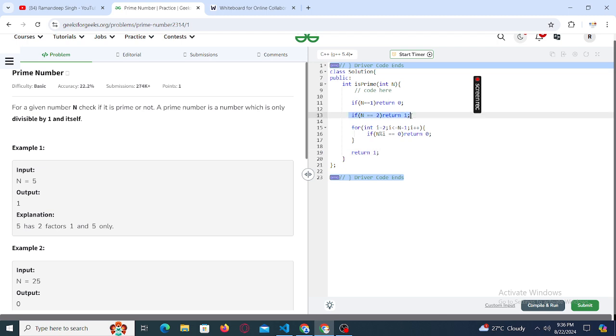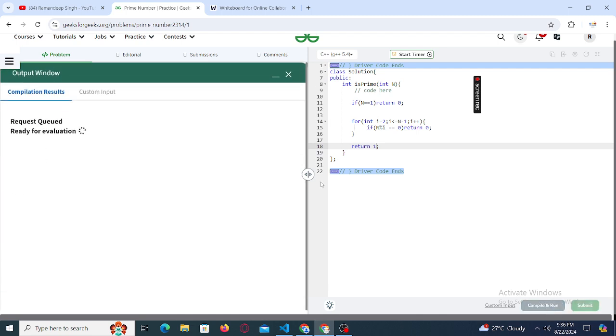So actually we can delete this condition as well because it will be checked right here. So if n is two, then this loop will not run, will simply return one right from here, means two will be considered as the prime number. So let's check if it works or not. Let's submit it.